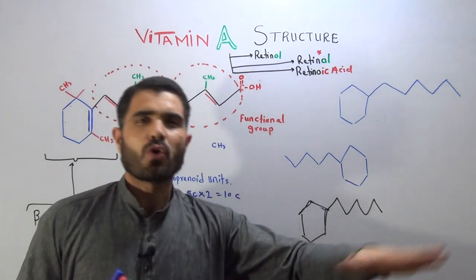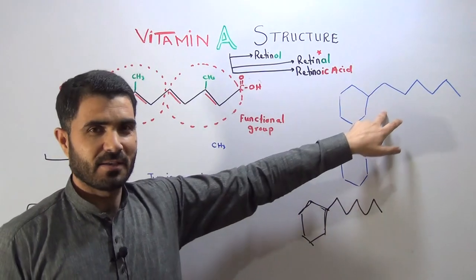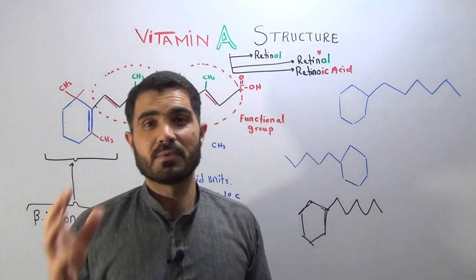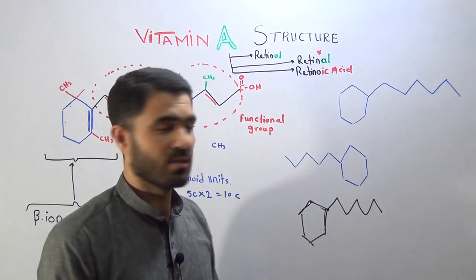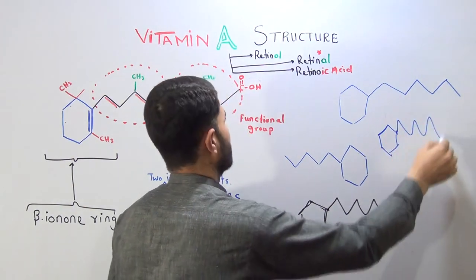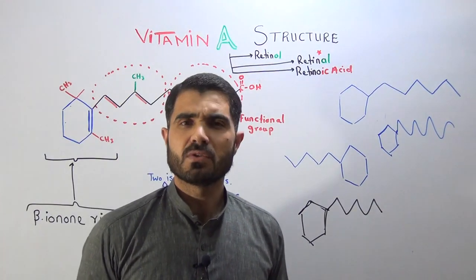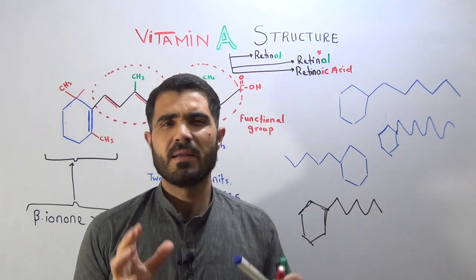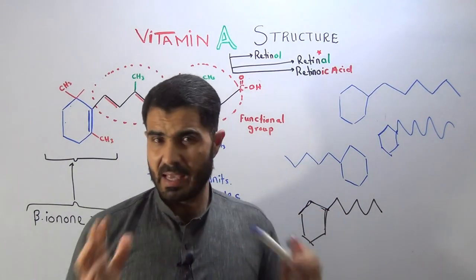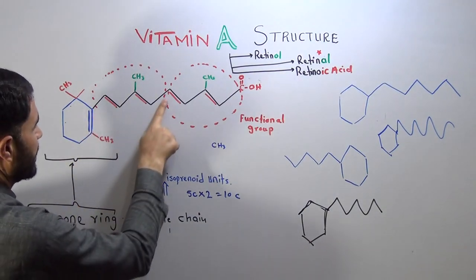If you want to write the vitamin A structure in short notes, this is the simplest way. At the very least you should have a simple image of the vitamin A structure. It's very easy — just write one benzene-like structure (it's not actually a benzene, but it resembles one). Then extend from it. This is just for lecture purpose. If you want to write the structure in detail showing each atom, functional groups, and bonds, then this more detailed approach would be best.